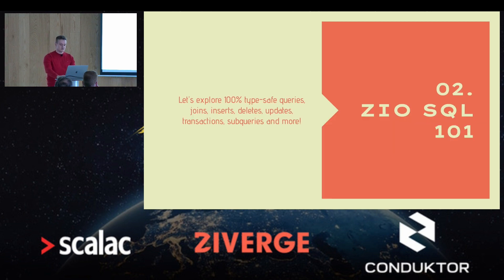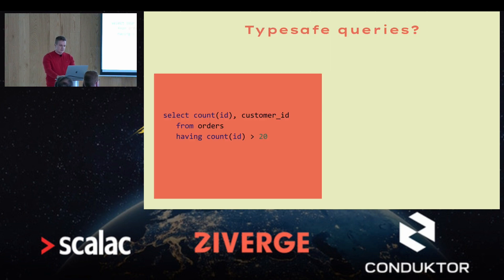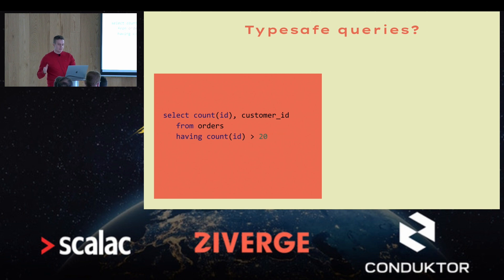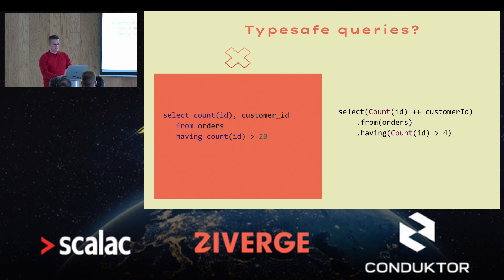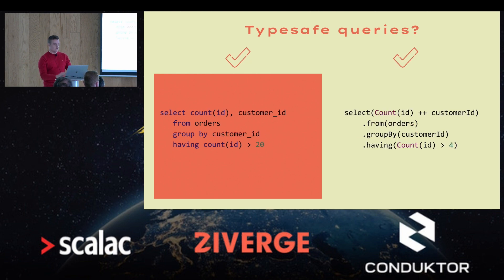Let's do a tour of ZioSQL. What do I mean when I say queries are typesafe? Here on the left we have a query that will fail at runtime on the database because we're using an aggregate function alongside another column. On the right, the equivalent ZioSQL query description fails to compile. Once we add a GROUP BY clause, the query is correct and the ZioSQL description compiles fine.